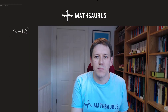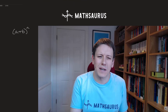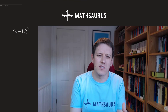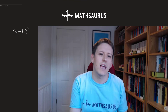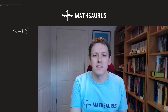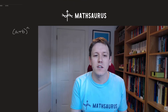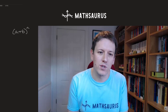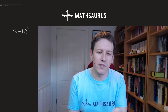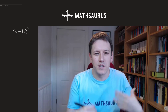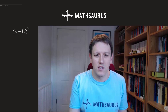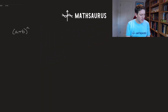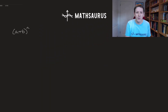So binomial expansions help us multiply out expressions of the form (a + b) to the power of n. Binomial literally means two numbers, so I've got a bracket with two different expressions in it, raised to a power. To start with, let's just think about some cases that we know.